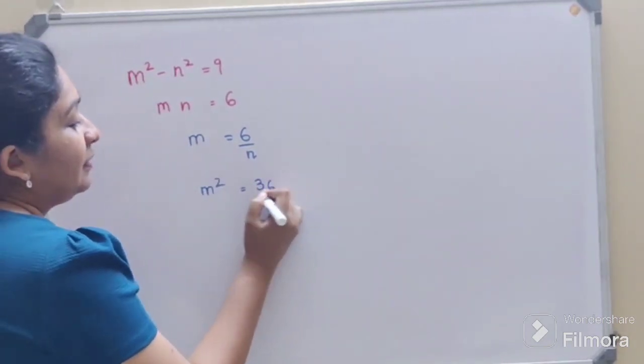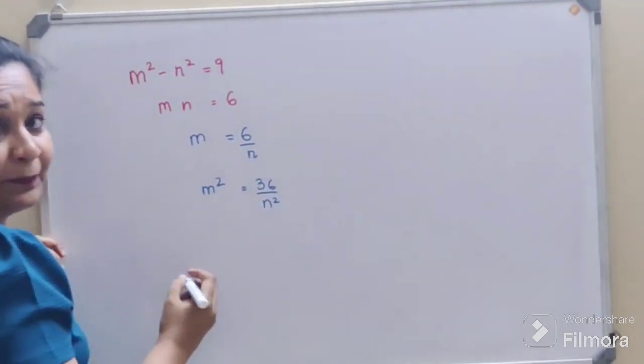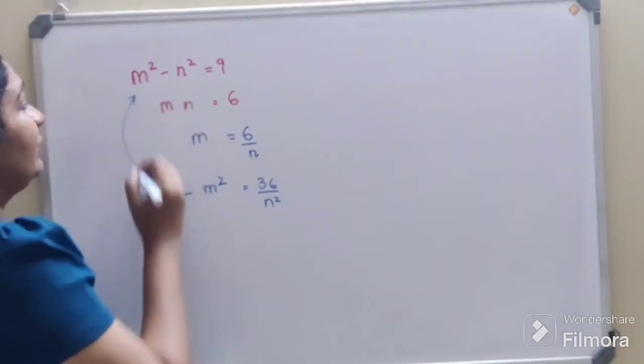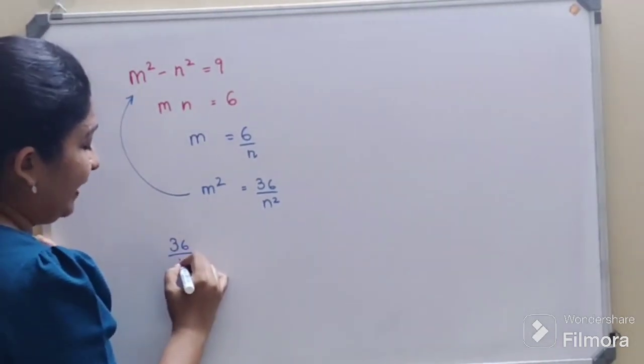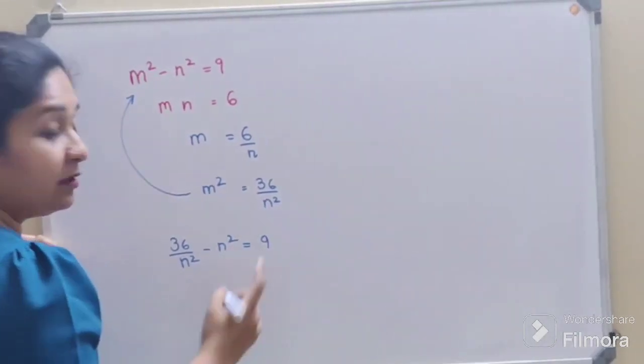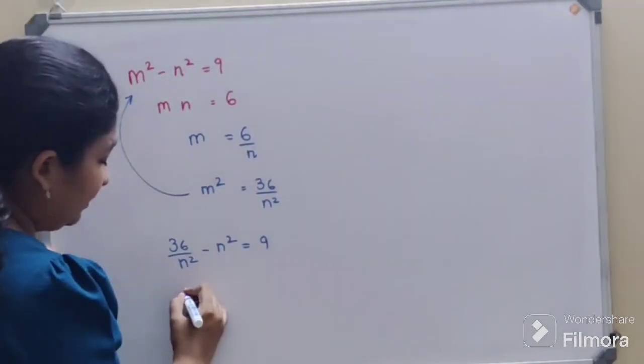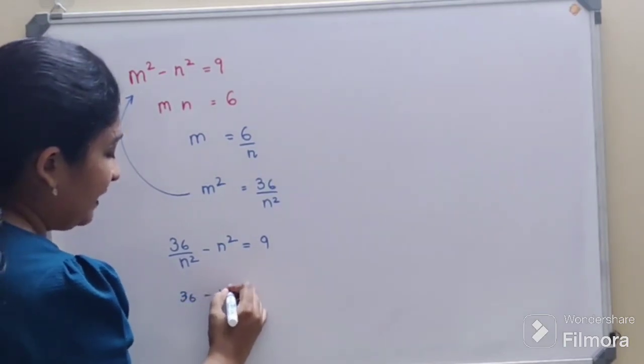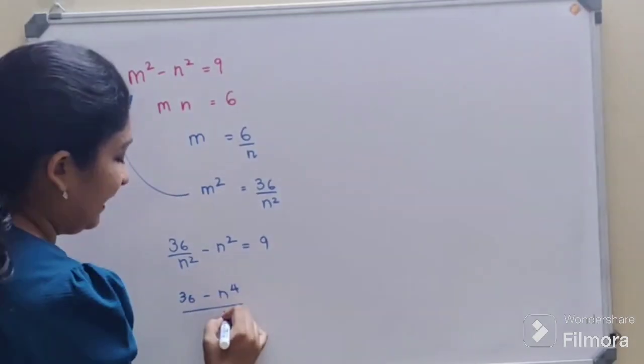Let's put this value over here. So we'll get what? 36 upon n square minus n square is equals to 9. So now let's take LCM. 36 minus n raised to 4 upon n square is equals to 9.